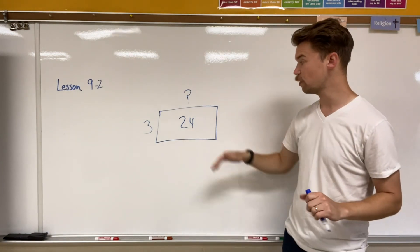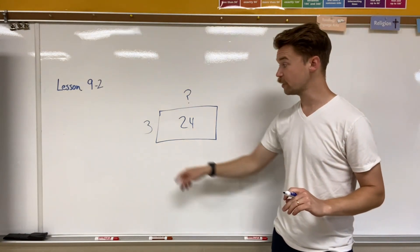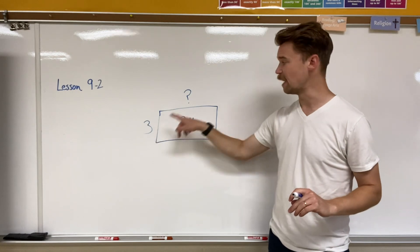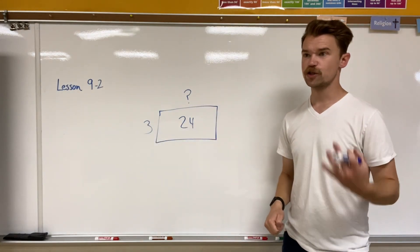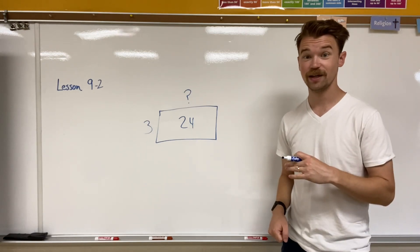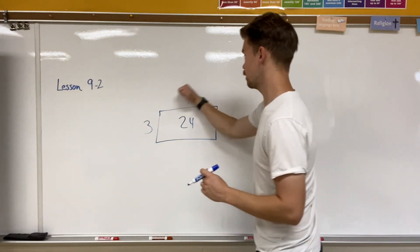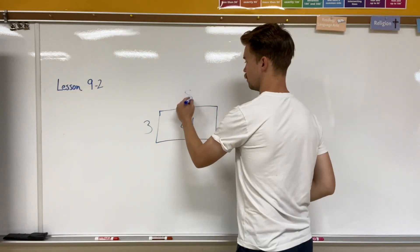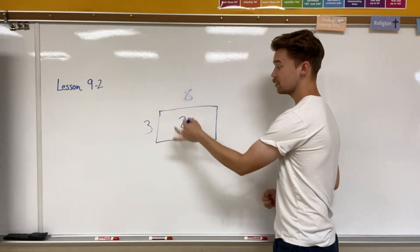For example, if I have the number 24, well one of my factors that I have is three, but what's its factor pair? Three times something is 24. I'm going to give you a second to think about that. Yeah, it's three times eight. So three times eight is 24.